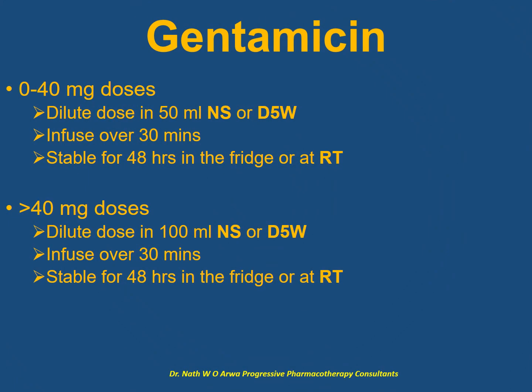For gentamicin, an aminoglycoside, for doses of up to 40 mg, dilute the aqueous solution in 50 ml of dextrose 5% or normal saline and infuse over 30 minutes; solutions remain stable for 48 hours in the fridge. For doses exceeding 40 mg, dilute in 100 ml of compatible IV fluid and infuse over 30 minutes. Stability remains 48 hours in the fridge or at room temperature.